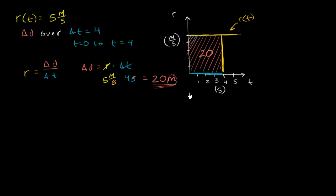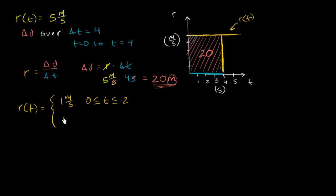But let's test that a little more and get some more intuition. Let's say we had a different rate function: one meter per second for zero ≤ t ≤ two seconds, and two meters per second for t greater than two seconds. What is the total change in distance over the first five seconds?